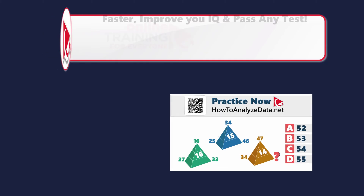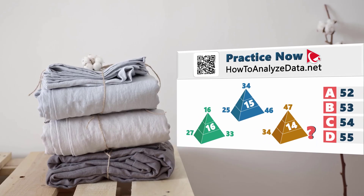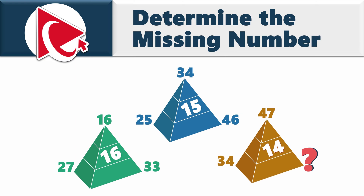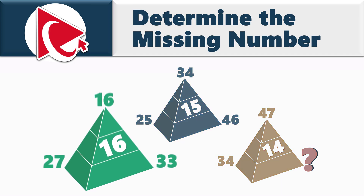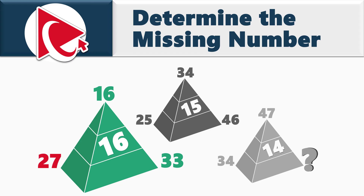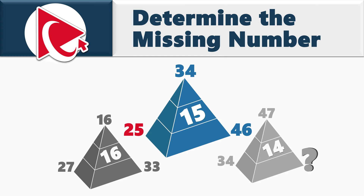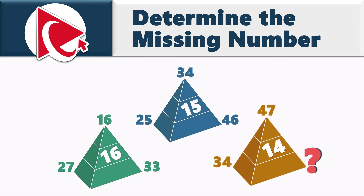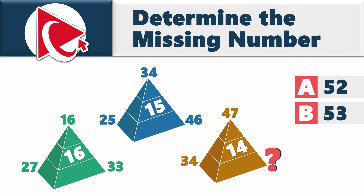This particular question is so tricky — it's like trying to fold a fitted sheet perfectly. You think you've got it, but it ends up a crumpled mess and nobody has the answer. You're presented with three pyramids, each with three numbers on the outside and one number inside. Pyramid 1: outside 27, 16, 33; inside 16. Pyramid 2: outside 25, 34, 46; inside 15. Pyramid 3: inside 14; outside 34, 47, and a missing number. Choices: A: 52, B: 53, C: 54, D: 55.